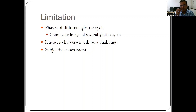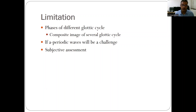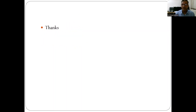Stroboscopy does have limitations: we are not seeing each individual cycle but different phases reconstructed as a perceived slow-motion wave. If the wave is aperiodic, diagnosing periodicity on stroboscopy becomes difficult. There is also subjective variability — different observers may report slightly different findings, so an experienced laryngologist is required. Video kymography, high-speed cameras, and artificial intelligence are the way forward to overcome these limitations.